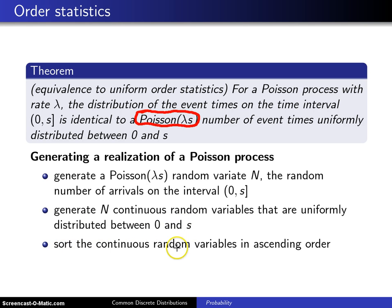When you sort those continuous random variables in ascending order, you get a Poisson process.